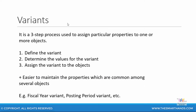A variant in SAP is an item with particular properties and can be assigned to one or more objects. It follows a three-step process. First, you define the variant — for example, let's say the variant is A. Then you determine the values for the variant, so A is a fruit and A is red in color. Then you assign the variants to the objects, so I can assign A, which is red in color and a fruit, to objects like apple, strawberry, cherry and so on. That's how a variant works in SAP.